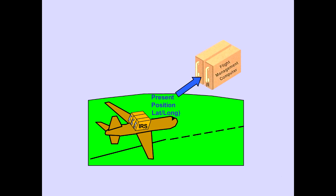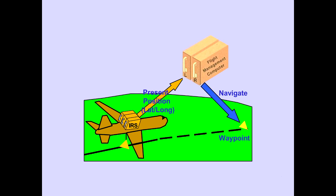The IRS also provides present position to the flight management computer in terms of current latitude and longitude. Flight management computers use the position information for navigating to the flight plan waypoints. The flight management computer position is covered in the flight management system introduction module.